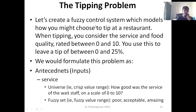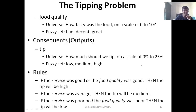The scale of 0 to 10 has been converted into three classes — poor, acceptable, and amazing. The next input is food quality — the other of the two inputs. The universe could be: how tasty was the food, again on a scale of 0 to 10. We can give it classes like bad, decent, and great, again with our own defined ranges for each.